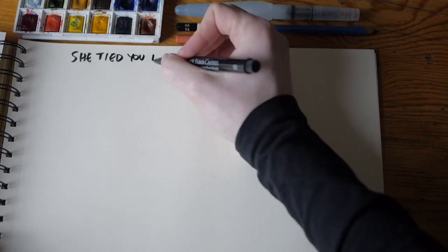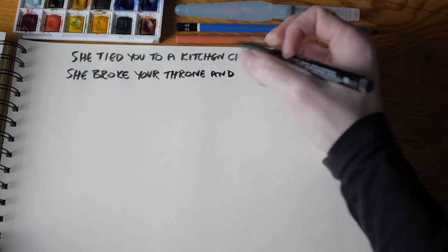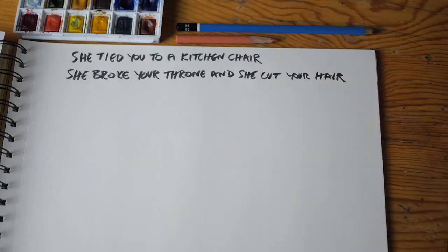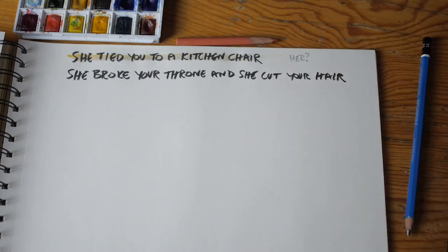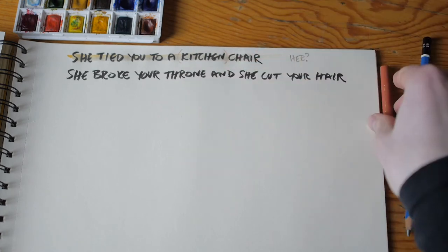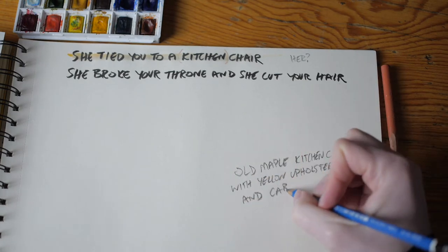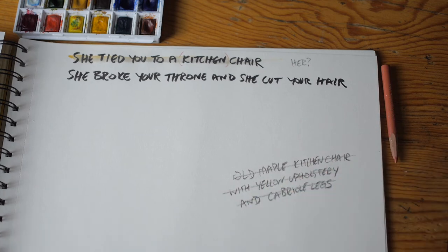Cohen does much the same sketchwork in the following line: "She tied you to a kitchen chair" — that's the lyric in its official printed form. It's worth noting that on the album, Cohen seems to sing "She tied you to her kitchen chair" instead of "a kitchen chair," but this disparity doesn't really change our analysis. He provides enough detail to provoke the imagination but is careful not to oversaturate the scene. If he had just said "She tied you to a chair," the line would be too sparse. If he had said "She tied you to the old maple kitchen chair with yellow upholstery and cabriole legs" — well, that's overkill.